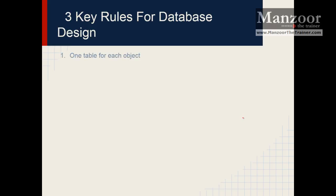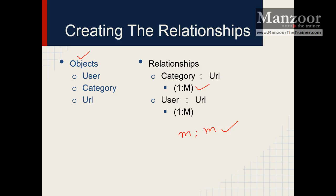The first rule is one table for each object. That means I have three objects here: User, Category, and URL. So I will get three tables.